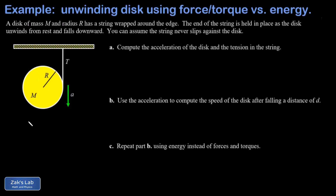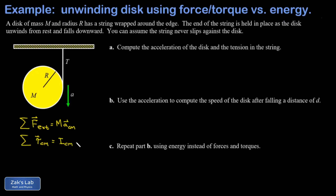Our basic toolkit for solving general dynamics problems is: first, the sum of all external forces on a rigid body equals mass times center-of-mass acceleration. Second, the sum of all torques with respect to the center of mass equals the moment of inertia with respect to the center of mass times the angular acceleration with respect to the center of mass. The challenge is to set up these two equations in terms of the given parameters, resulting in a system of two equations and two unknowns.